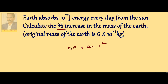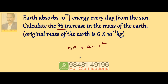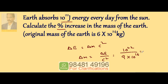Here, 10 to the power of 22 Joules of energy is absorbed by the earth. If this is completely converted into mass, how much mass is it equal to? Delta E = 10²², C squared = (3 × 10⁸)² = 9 × 10¹⁶. So delta M equals 1 by 9 into 10 to the power of 6 kg.